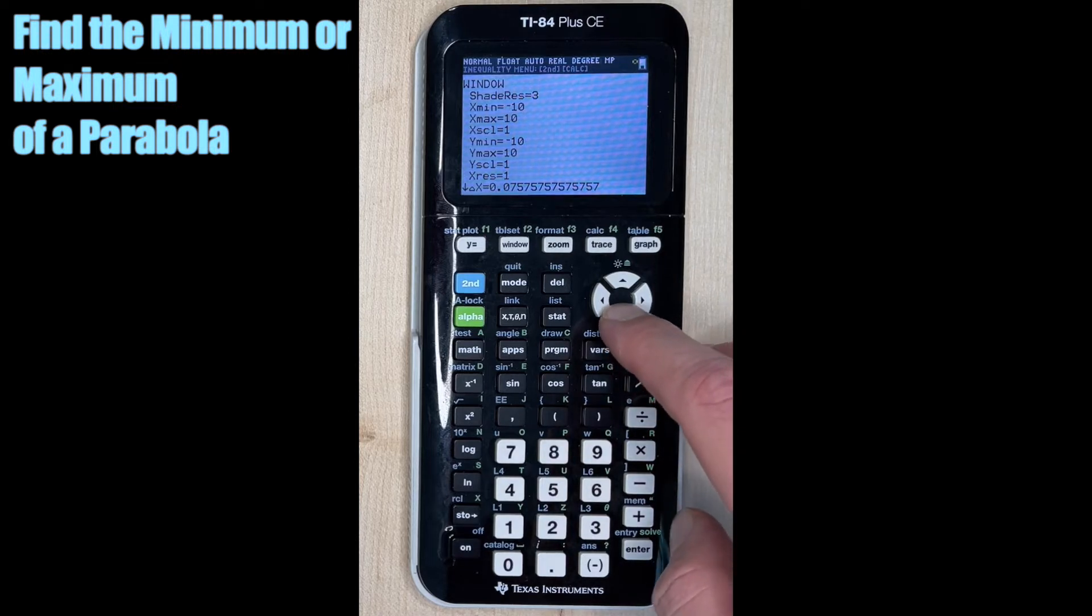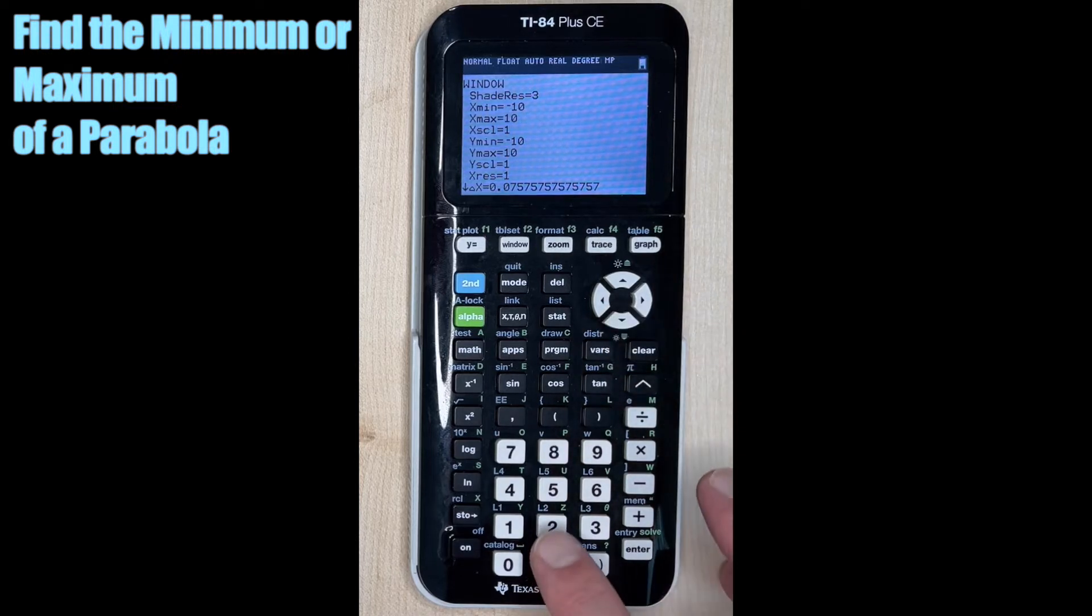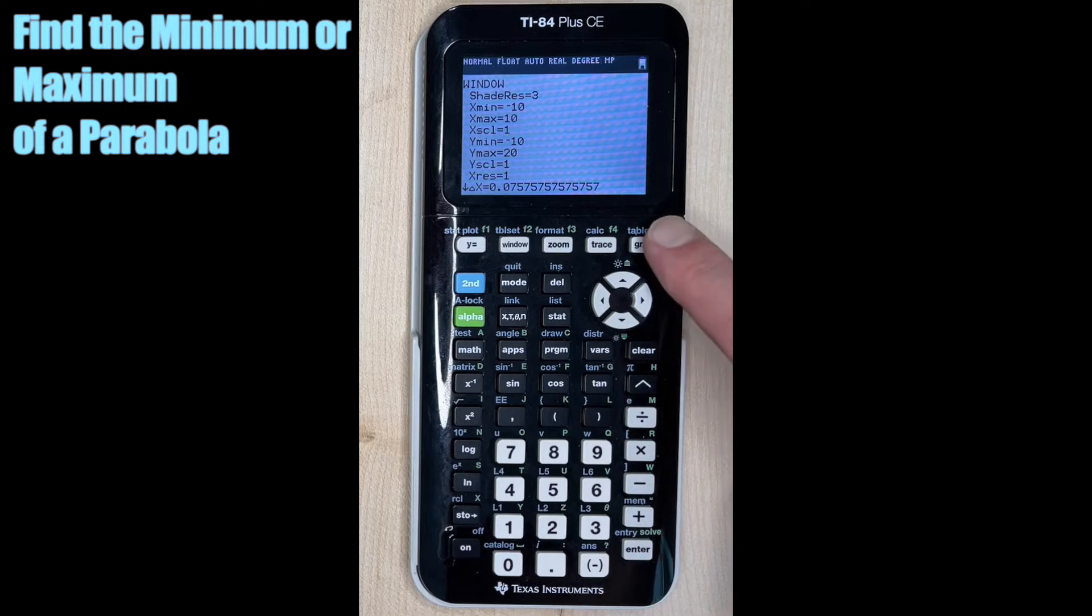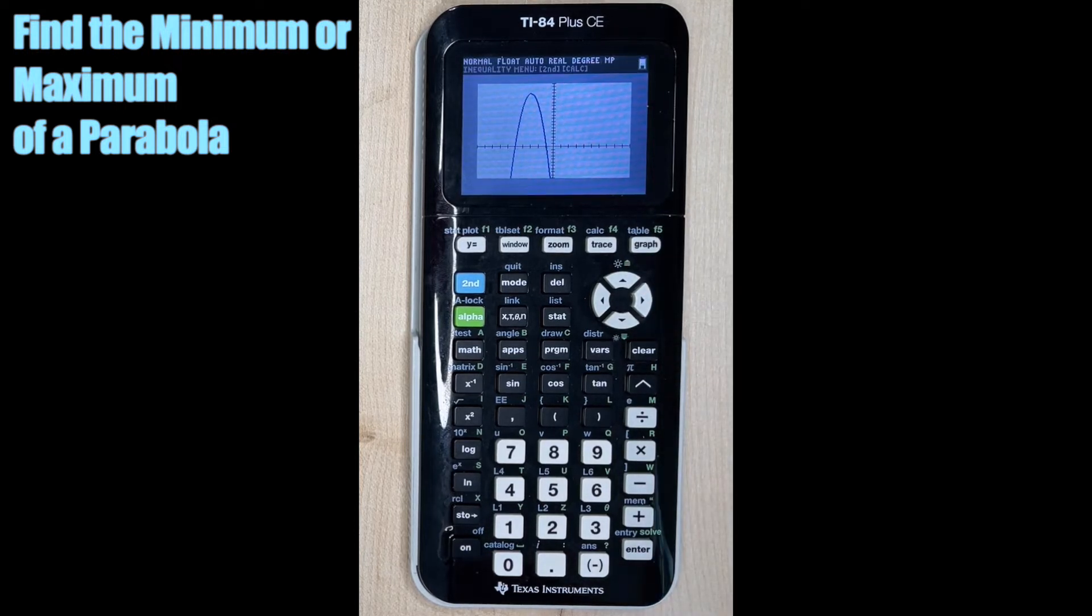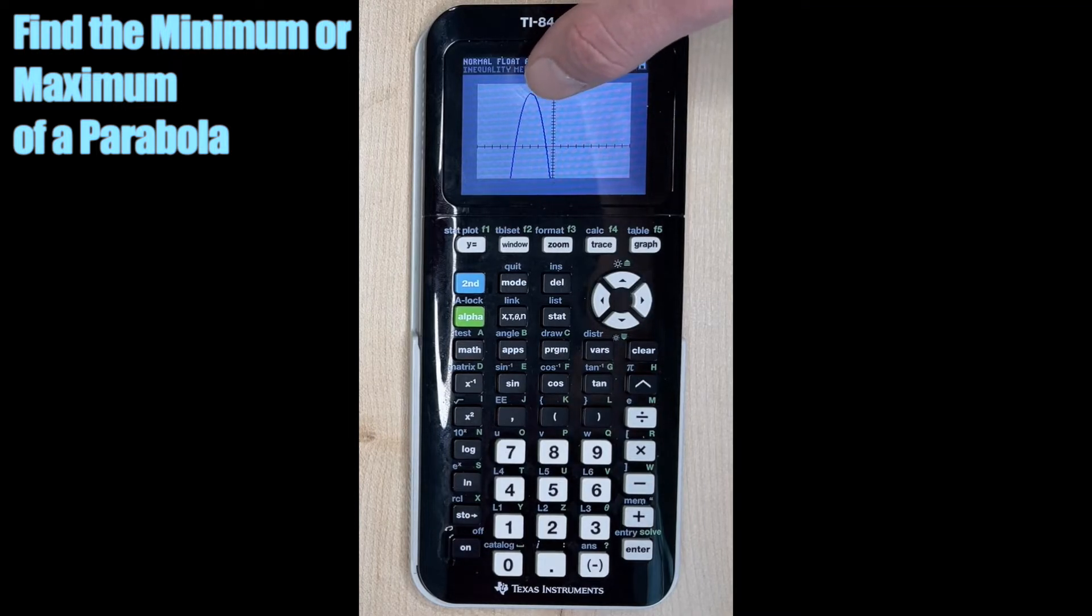So we need to see higher. That would be considered the y max. Okay. So let's just do 20. Right now it's 10. So let's hit graph again. And now we can see the vertex of that parabola. So we know the maximum is the y value of this point right up here.